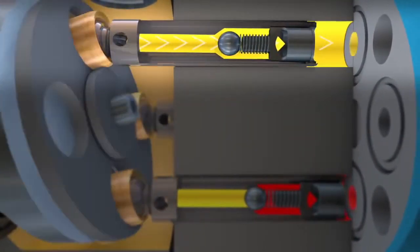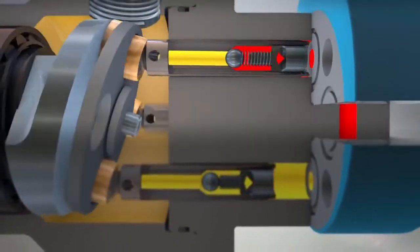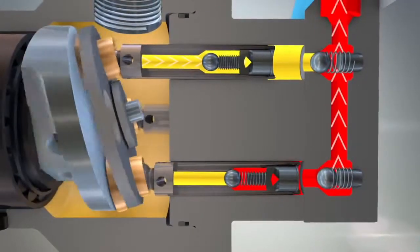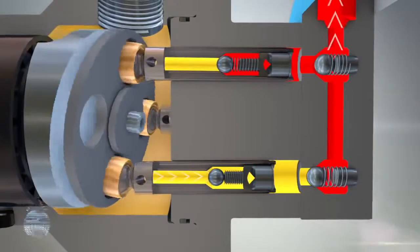During compression, the inlet check valve closes and pressure in the chamber rises. When load pressure is reached, the outlet check valve opens.